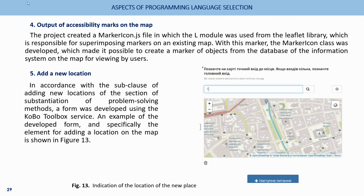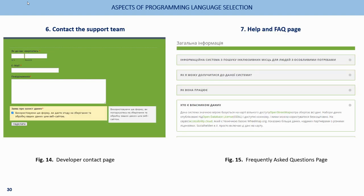For adding a new location, a form was developed using the CoboToolbox service; Figure 13 shows the element for adding a new location on the map, indicating the location of the new place. For contacting the support team, a developer contact page was created. Figure 15 shows the Frequently Asked Questions page.